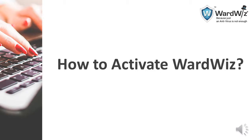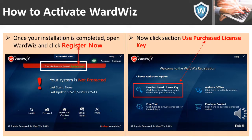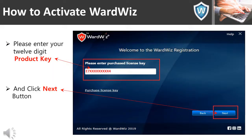Once your installation is completed, the next step is to activate WordWis. Open WordWis and click 'Register Now,' then click the section 'Use Purchase License Key' in the next screen. In the following screen, please enter your 12-digit product key and then click the Next button.